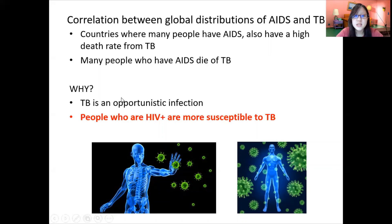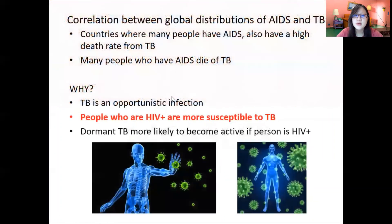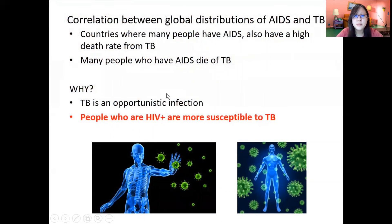Because TB is an opportunistic infection, people who are HIV positive are more susceptible to TB. If someone is HIV positive, dormant TB is more likely to become active as well. And that's it — that is disease number 4 of Chapter 10, Infectious Diseases. See you in the next video.